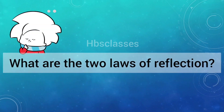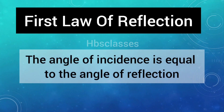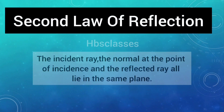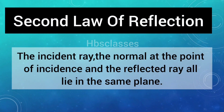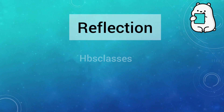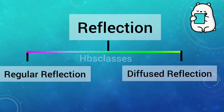The first law states that the angle of incidence is equal to the angle of reflection. The second law states that the incident ray, the normal at the point of incidence, and the reflected ray all lie in the same plane. In this video we will learn about two types of reflection: regular reflection and diffused reflection, also called irregular reflection.